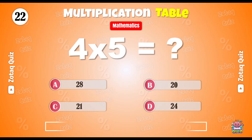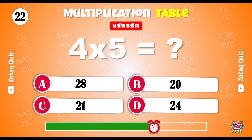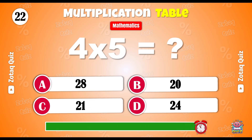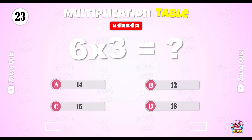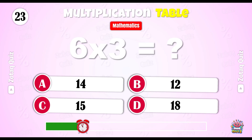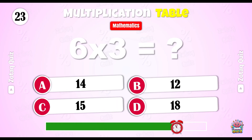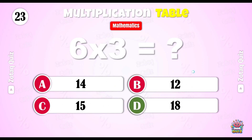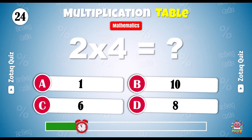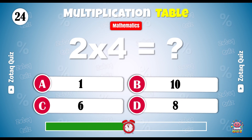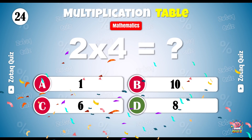Here is your next question. What is 4 x 5? 20 is the right answer. Solve this. 6 x 3 is equal to — and the right answer is 18. What is 2 x 4? 8 is the right answer.